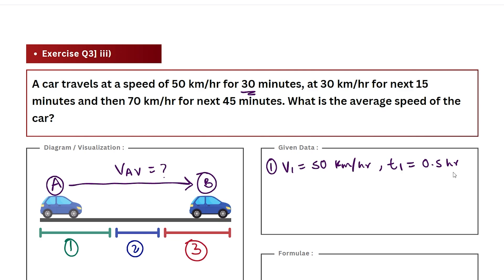Similarly I'm going to write values for all the remaining two parts. So we have v2 as 30 kilometer per hour and corresponding timing that is t2. In the question it's 15 minutes, if I convert it into hours it will be 0.25 hour. And for part three we have v3, that is speed for part three which is 70 kilometer per hour and we have corresponding time duration that is t3 which in the question is 45 minutes but in hours it becomes 0.75 hours.